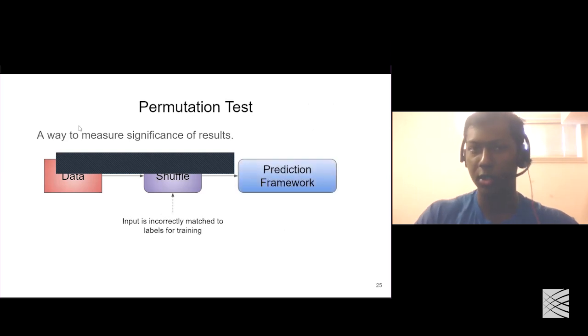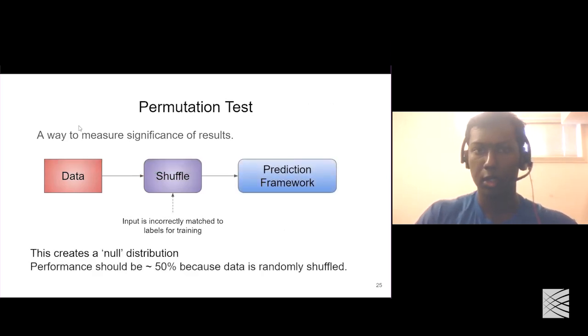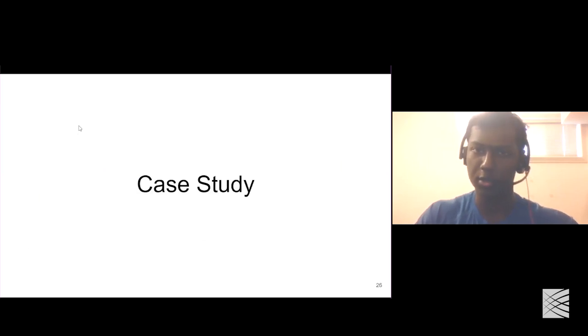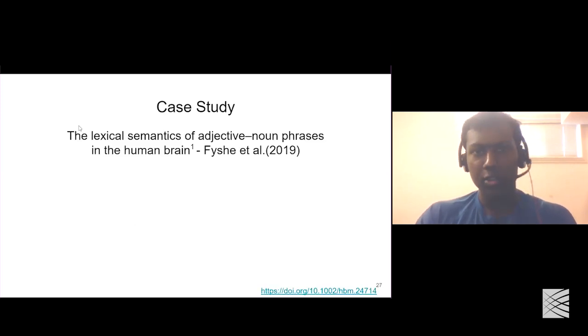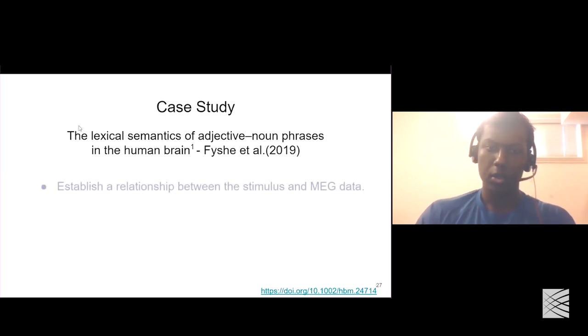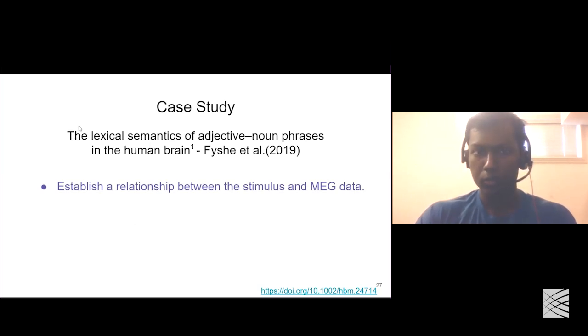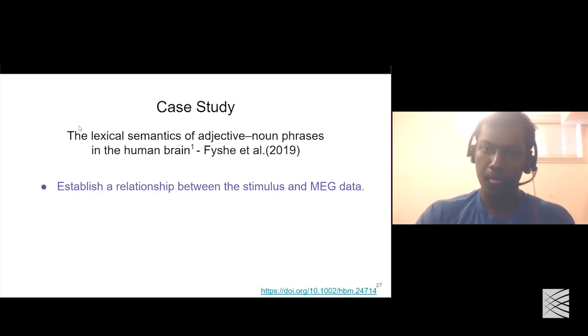So we talked about the permutation test and how it measures the significance of the two-versus-two test. Now that we've looked at word vectors, how we can record the brain, and the decoding pipeline, let's move on to the case study where the decoding pipeline is actually implemented. The paper is Dr. Fish's 2019 work, titled 'The Lexical Semantics of Adjective-Noun Phrases in the Human Brain.'